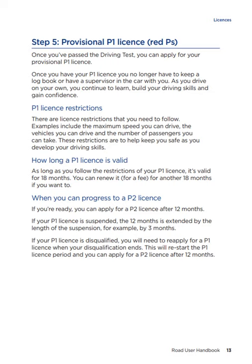How long is a P1 licence valid? As long as you follow the restrictions of your P1 licence, it's valid for 18 months. You can renew it for a fee for another 18 months if you want to. When you can progress to a P2 licence: if you're ready, you can apply for a P2 licence after 12 months. If your P1 licence is suspended, the 12 months is extended by the length of the suspension — for example, by 3 months. If your P1 licence is disqualified, you will need to reapply for a P1 licence when your disqualification ends. This will restart the P1 licence period and you can apply for a P2 licence after 12 months.